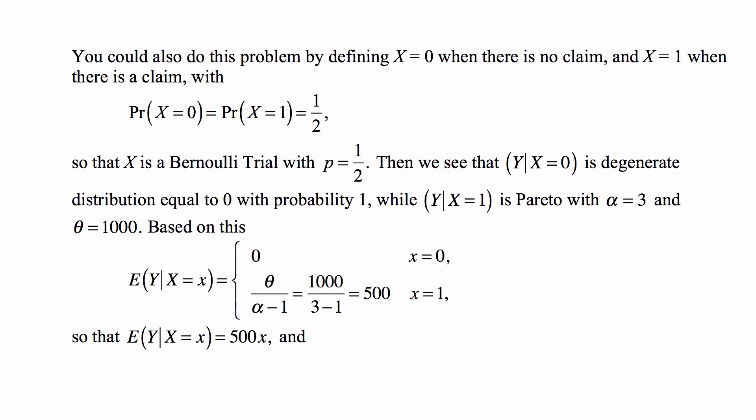Now you could also do this problem by defining X, a new random variable. X = 0 when there's no claim, and X = 1 when there is a claim, and the probability of each of the two values is one half. So X is a Bernoulli trial with p = 1/2.